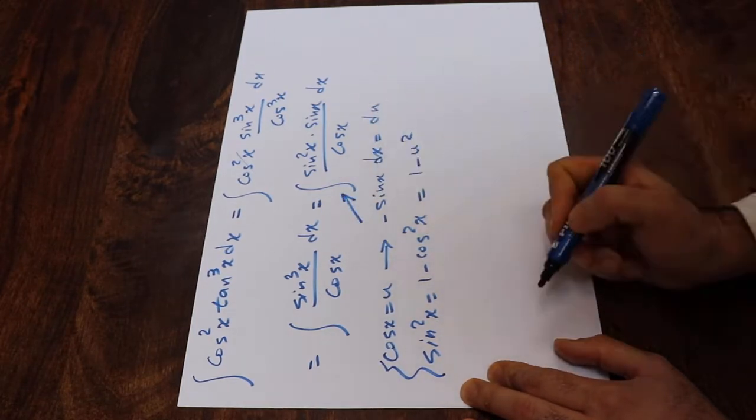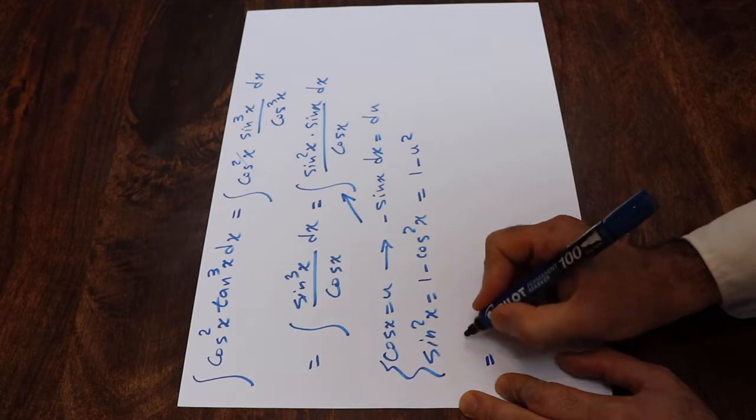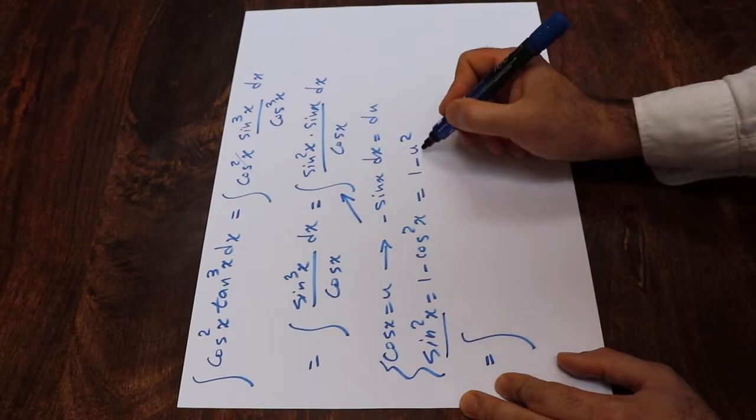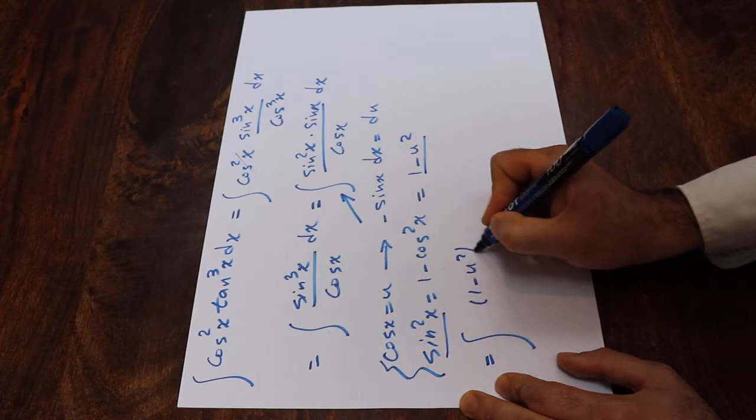So all you need to do here is to substitute this expression into this integral. And if you do that, that will be equal to, instead of sine 2x, I write 1 minus u2.